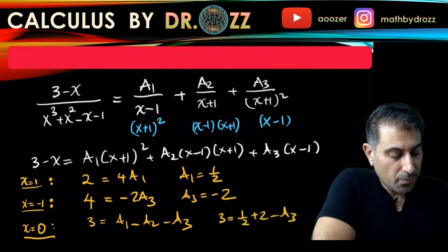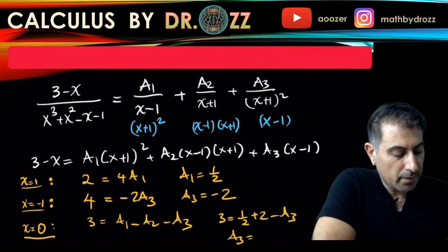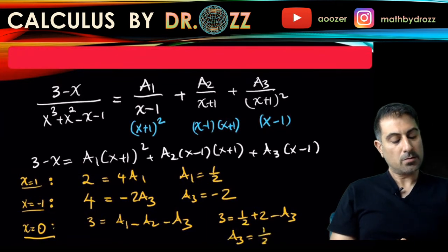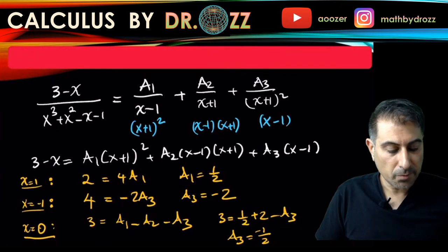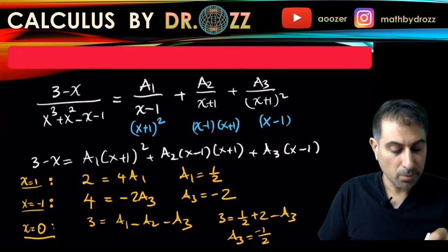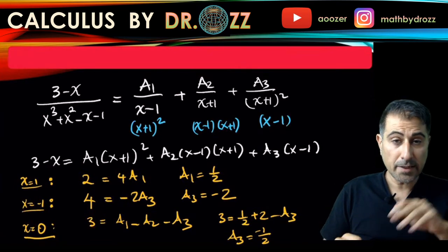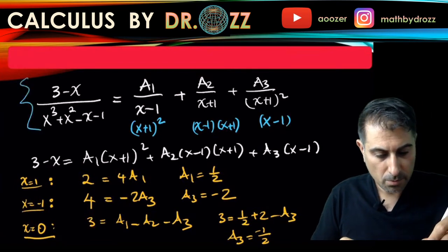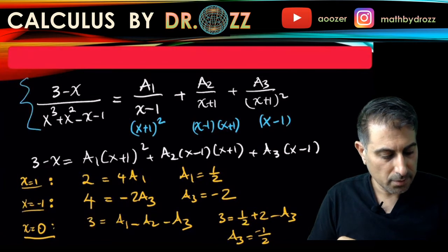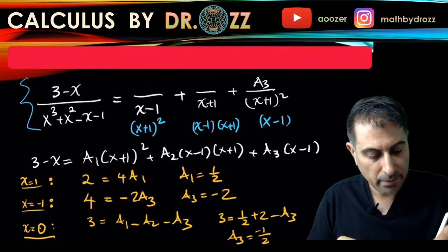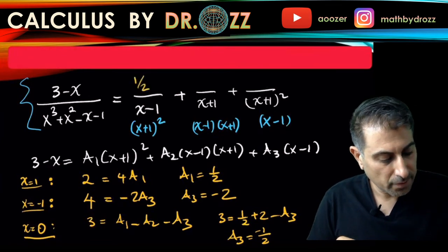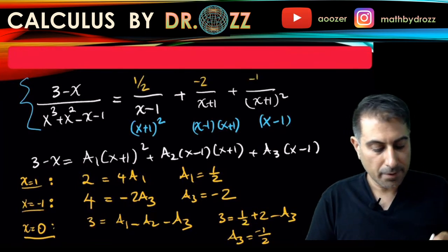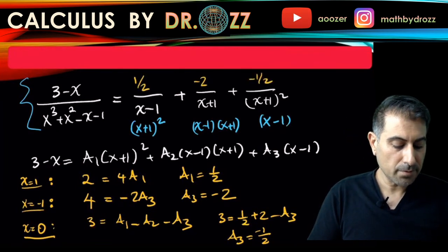With x equals zero: 3 equals one half minus A2 minus A3. Substituting A3 equals negative 2: 3 equals one half minus A2 plus 2, giving A2 equals negative one half. So to summarize: A1 equals one half, A2 equals negative one half, A3 equals negative 2.